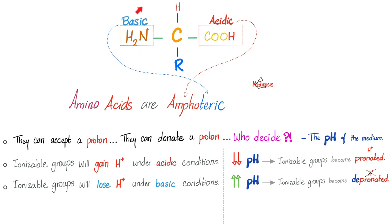Amino acids are amphoteric. They have a basic part and an acidic part. They can accept a proton. They can donate a proton. Who will decide? The pH of the medium will decide. In an acidic environment, the ionizable group will gain a proton because the acid has too much proton to give. In a basic solution, you will lose protons and give them to the solution in order to try to achieve equilibrium.